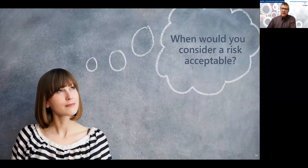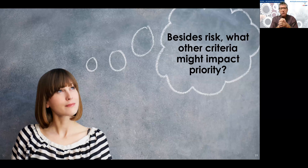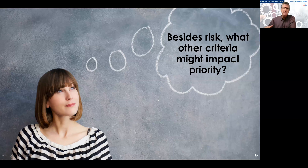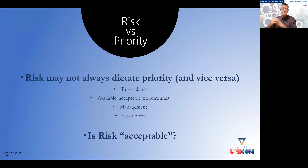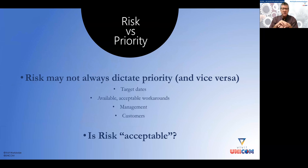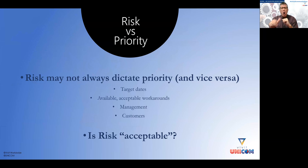Think about when a risk would be considered acceptable, and what other factors besides risk might influence priority. If the stakeholder or leadership says something is high priority, even if the risk score doesn't bear that out, then it's a high priority — risk may not always dictate priority and vice versa. Also ask: is the risk acceptable? If it's low impact with easy workarounds and it would cost the organization significantly more to resolve the issue than to leave it in, then that risk may be acceptable.